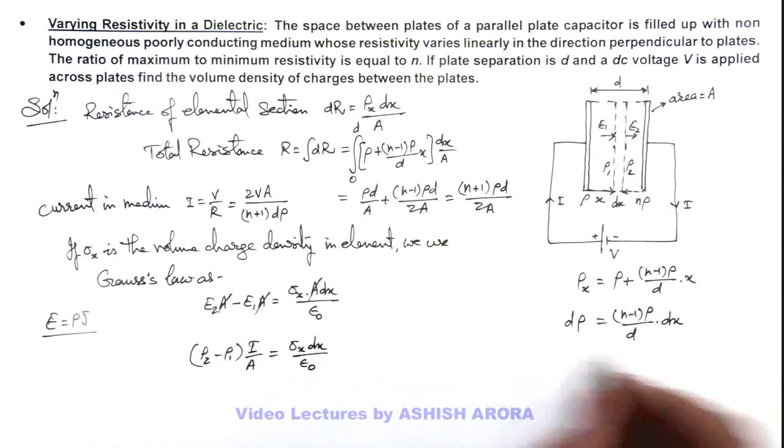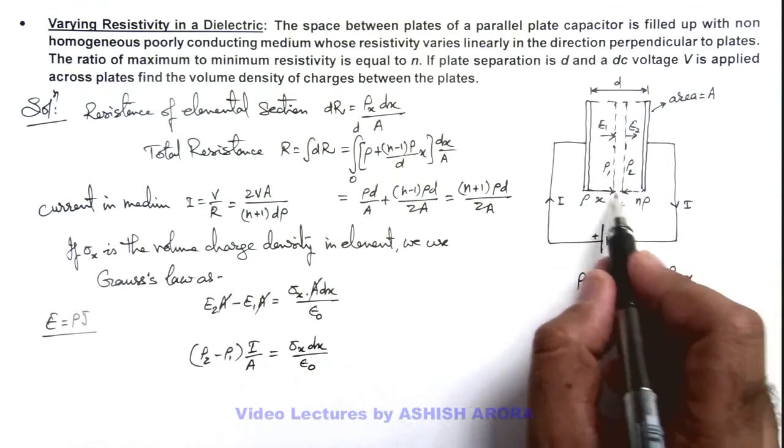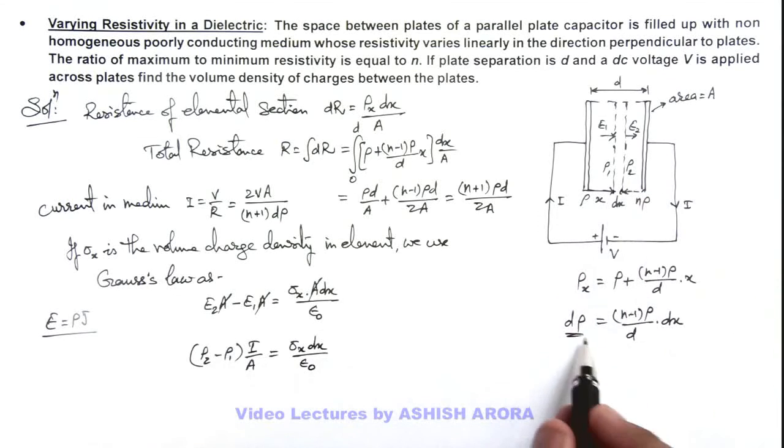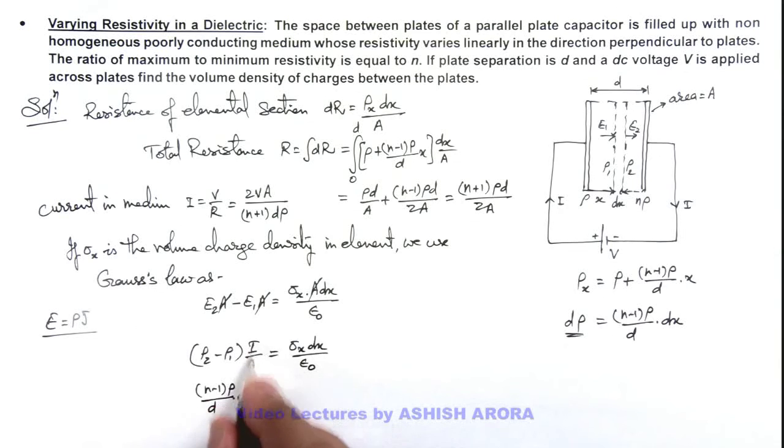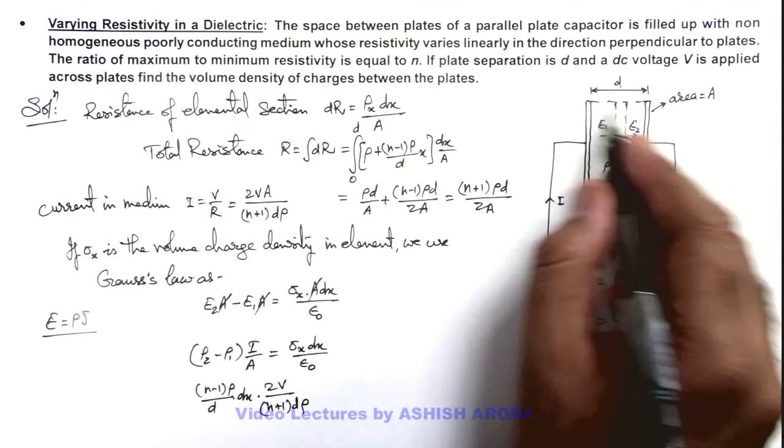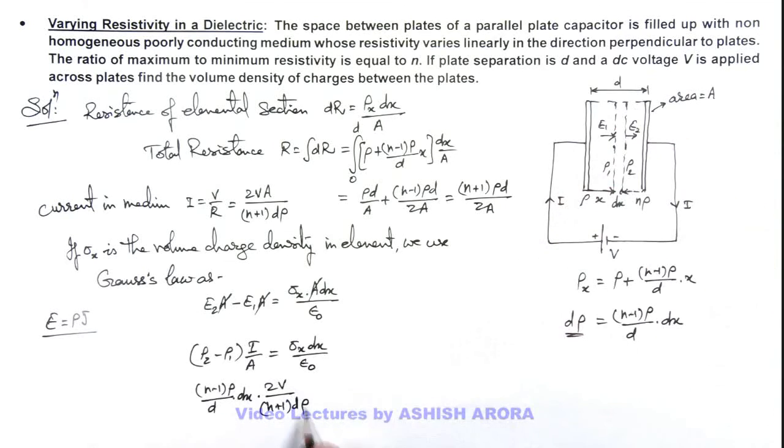Here, ρ₂ minus ρ₁ we can write as dρ because this is across an element of width dx only. So if we substitute the value, this will be (n-1)ρ₀/d multiplied by dx. And i/A here we can write as 2V/(n+1)dρ₀. Here d is the separation and ρ₀ is the resistivity at one end which can be cancelled out here. And this is equal to σₓdx/ε₀.